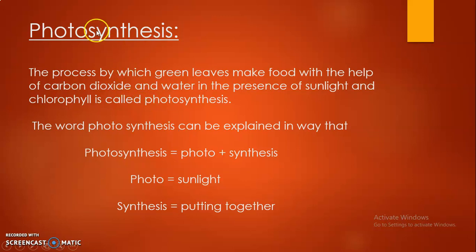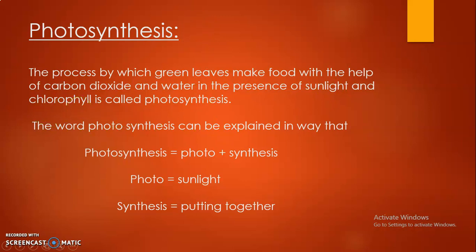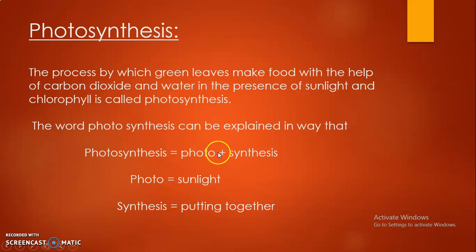We start with photosynthesis. Photosynthesis is the process by which green leaves make food with the help of carbon dioxide and water in the presence of sunlight and chlorophyll. This whole process is called photosynthesis. The word photosynthesis can be divided into two words: photo and synthesis. This photo is not the one we click with the camera or mobile phone — photo means sunlight, and synthesis means to put together.